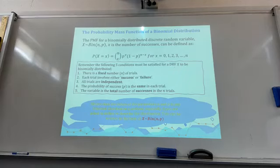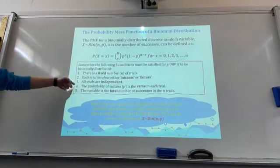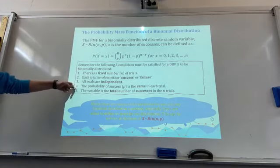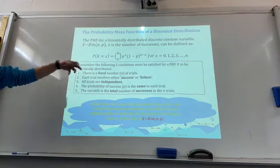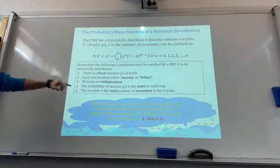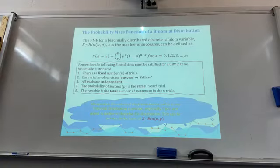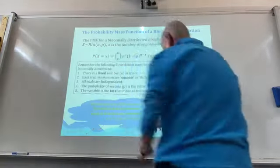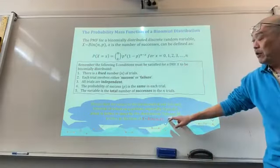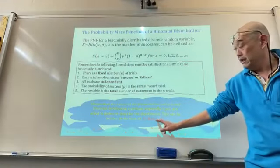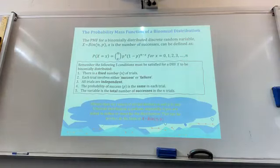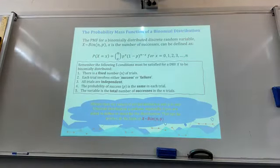All trials must be independent, so trial one cannot affect trial two, cannot affect trial three, or four and five. The probability of success p is the same in each trial, so the probability of success for all trials is the same. The variable is the total number of successes in the n trials. In the exam, you must always note that there's a number of trials and that is your probability of success.